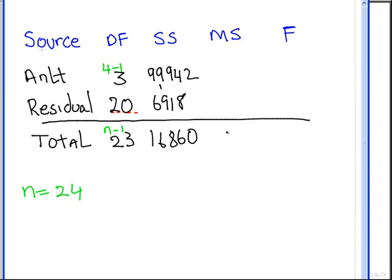The next thing we have to do is find these values here. And so the mean square, as always, mean square is the sum of squares divided by degrees of freedom. So this is going to be 99942 divided by 3. So that is 33314.